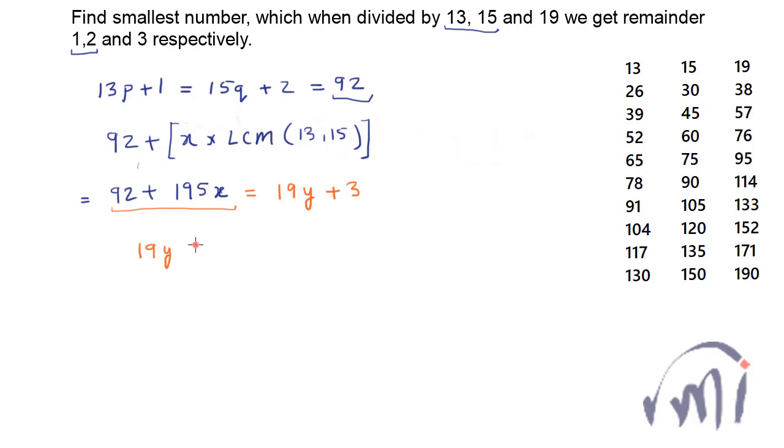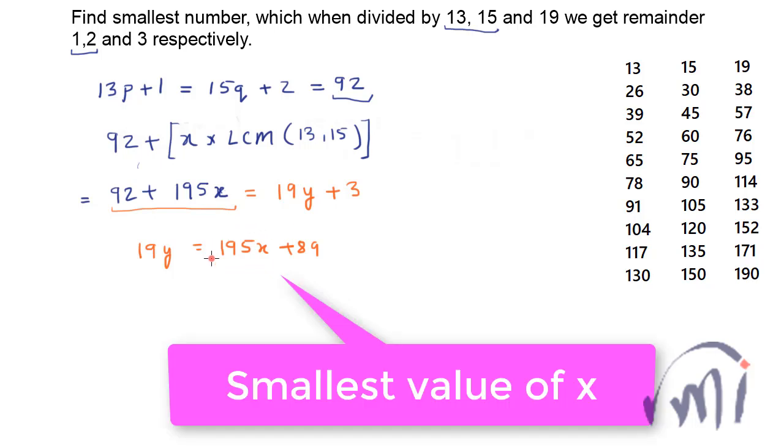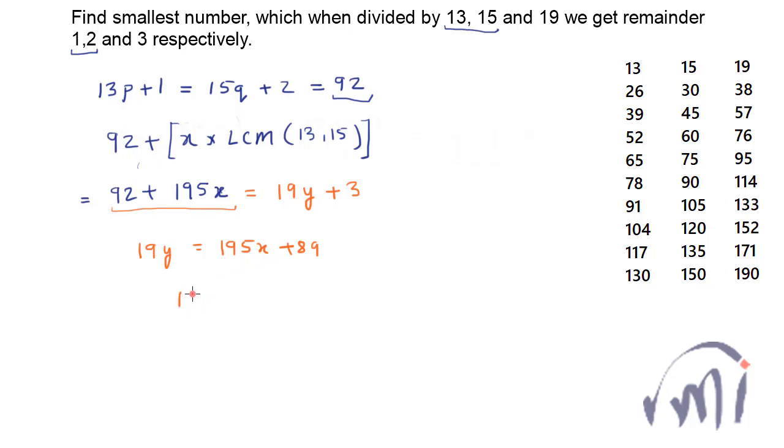So this number which satisfy the first condition for 13 and 15 should also satisfy this condition. That is when this number is divided by 19 you get remainder as 3. So 19y can be written as 195x plus 89. So here 19y is completely divisible by 19 and now we have to check for which value of x this right hand side will be completely divisible by 19.